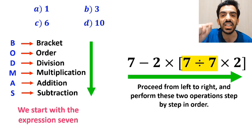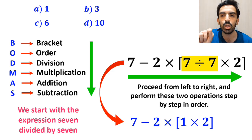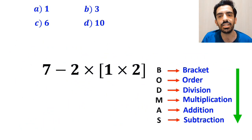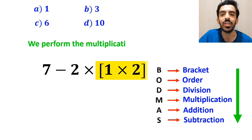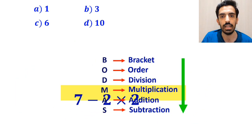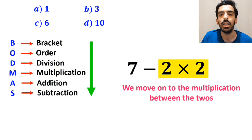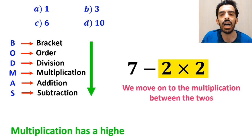First we start with the expression 7 divided by 7, and we write this expression as 7 minus 2 multiplied by 1 times 2 inside the brackets. And the next step, we perform the multiplication between 1 and 2, and this expression simplifies to 7 minus 2 times 2.